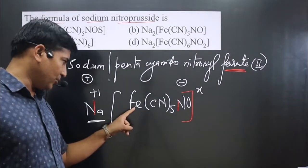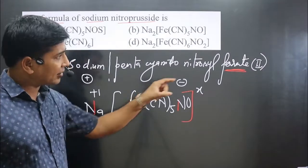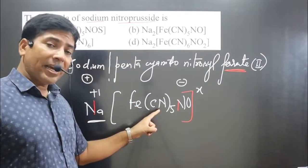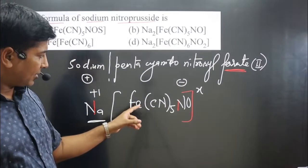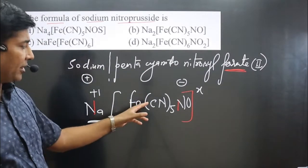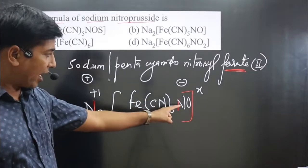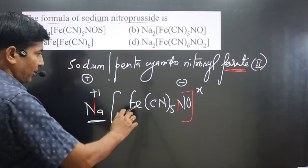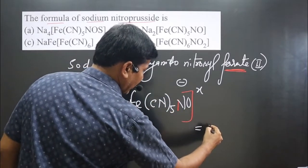So X value we can calculate because we know the oxidation number of iron, this is what, 2 given already in the name. This is cyanide ion, minus one charge, this is a monodentate, unidentate ligand minus one charge is there. I know it is having plus charge because this is a cationic ligand. Now pay attention carefully. So total charge is X.